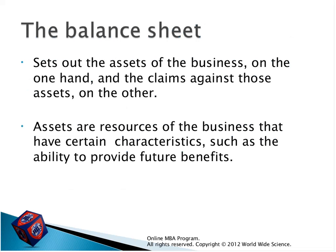What is the balance sheet? It sets out the assets of the business on one hand and the claims against those assets on the other. Assets are the business resources — they have certain characteristics, such as being able to provide future benefits. This answers why we put equipment, land, or buildings on the debit side — because they are our resources. With the help of these resources, we can do business. All assets come under the debit side — they help us make a business and provide future benefits like profits.